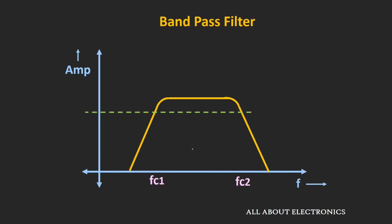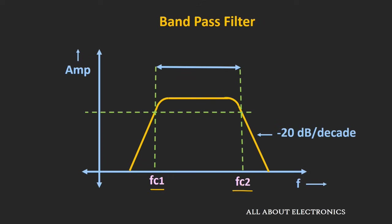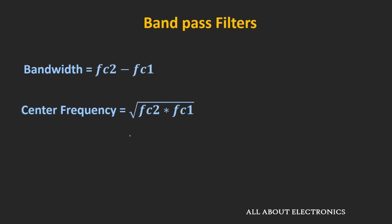If you see the frequency response of this bandpass filter, you will immediately notice that it has two cut-off frequencies: a lower cut-off frequency and a higher cut-off frequency. Beyond these cut-off frequencies, the roll-off will be at the rate of 20 dB per decade — particularly true when you design the bandpass filter by cascading first-order high pass and low pass filters. The frequency difference between the two cut-off frequencies is known as the bandwidth. The geometric mean of the two cut-off frequencies is known as the center frequency of this bandpass filter.